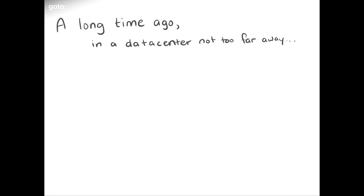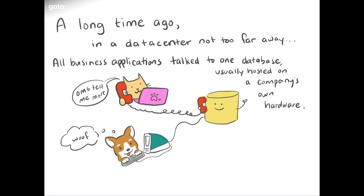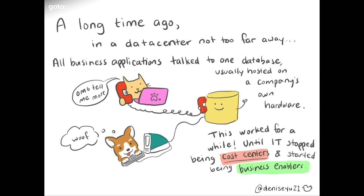A long time ago, in a data center not too far away — probably in your building's basement — all business applications talked to one database. That database was probably run on hardware owned by that company, probably lived in a basement or closet somewhere. This is what client-server architecture looks like: multiple business applications talking to one database. This worked for a really long time.